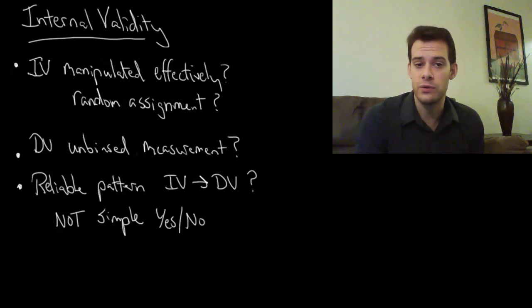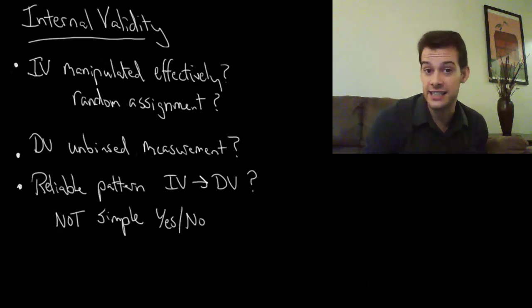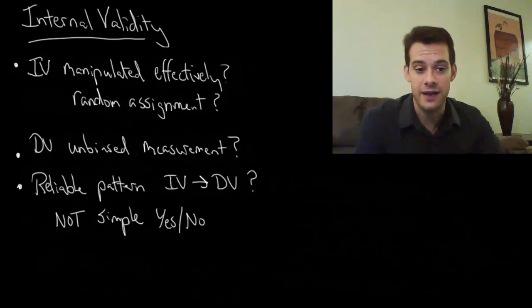And researchers are going to disagree with one another about what should be considered an effective manipulation or what's considered an unbiased measurement. Or even how they should interpret the results, which statistics should we use to determine whether there's a clear pattern between these two variables. These are areas for debate and argument and criticism. And that's a good thing because we don't want to just settle for a simple yes or no when these are actually very complicated topics. And they're complicated because there is not one way to do these things.